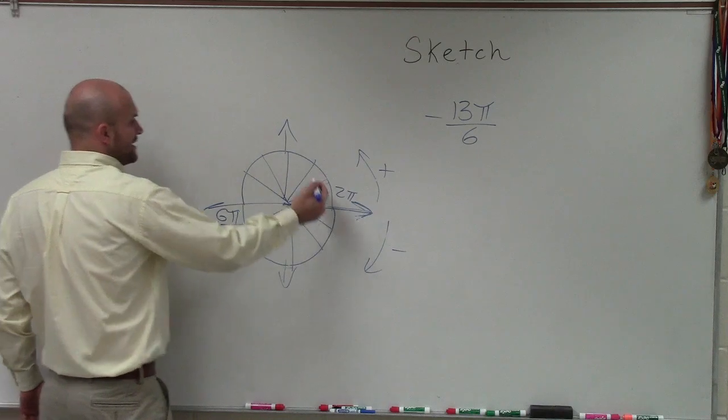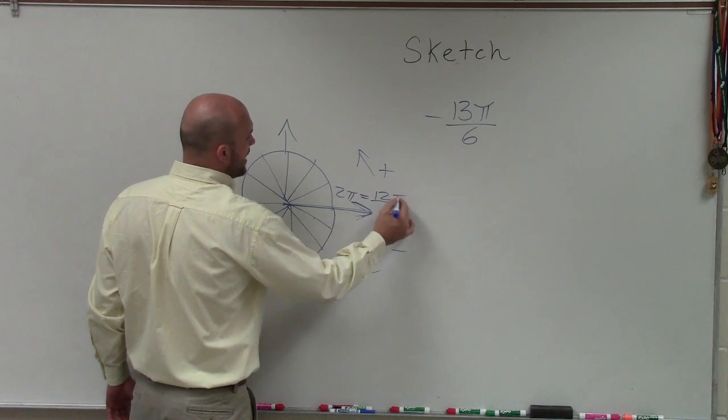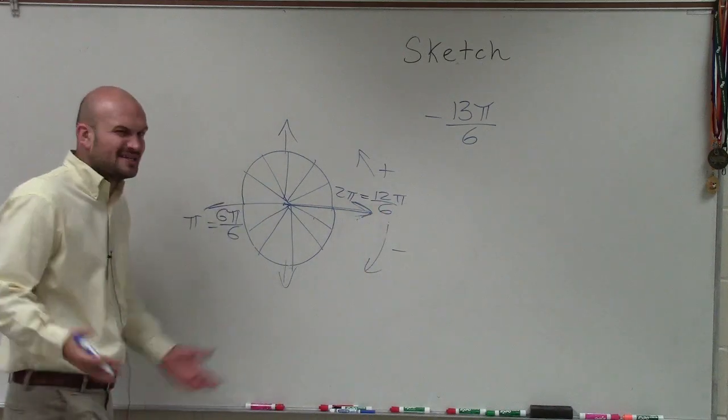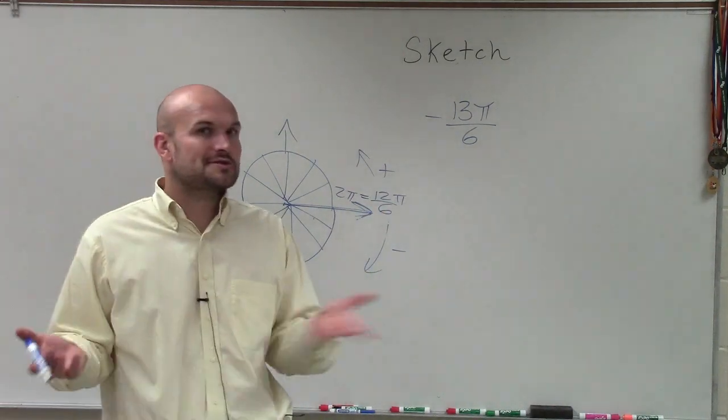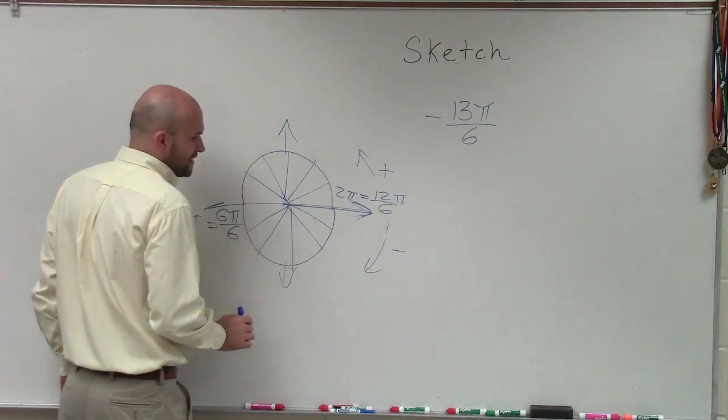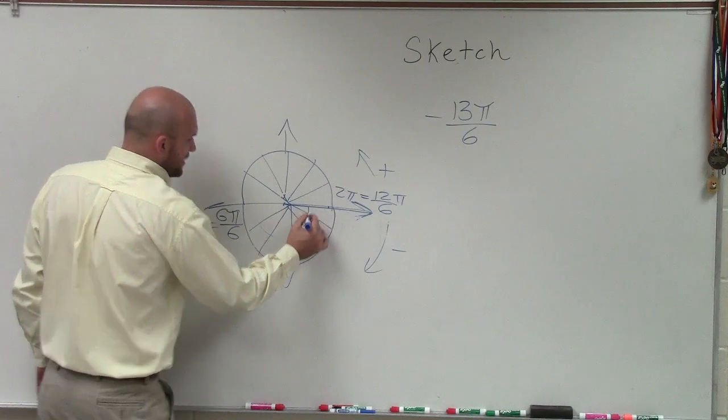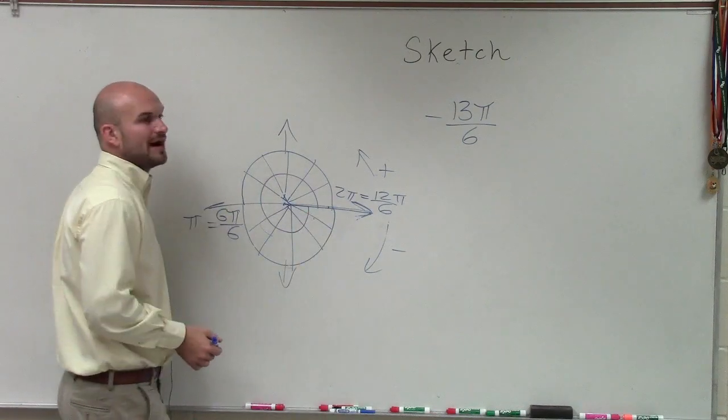So therefore, when I keep on adding up, I notice that 2π is equivalent to 12π over 6. Just do 12 divided by 6, you get 2. So it's still the exact same thing. But now we have this in the negative direction. So that means I'm going to rotate my ray in the negative direction. So if I go all the way around, that's negative 12π over 6.